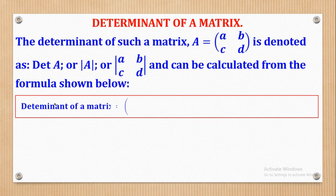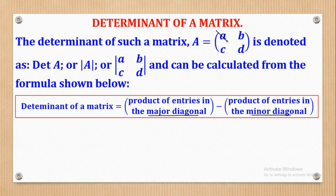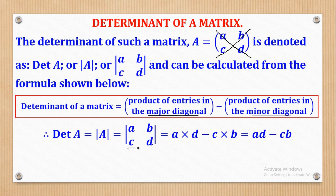The Determinant can be calculated from the formula: the Determinant of a Matrix equals the product of entries in the Major Diagonal minus the product of entries in the Minor Diagonal. If you look at this 2x2 Matrix, the entries along the main line are the Major Diagonal entries, and the entries along the other line are the Minor Diagonal entries. Therefore the Determinant is A times D minus C times B, giving AD minus CB.